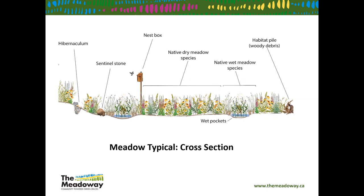When it comes to meadow typicals, every meadow is completely different. In the Meadoway, most typicals are native dry meadow species. There are currently no wet pockets or wetland features, but it is always a potential addition based on hydrology. If you have parkland or forest edge outside the hydro corridor, you can look at adding woody debris and hibernaculums for a different variety of natural wooded habitat — bringing in birds and wildlife and adding texture and height to the space.